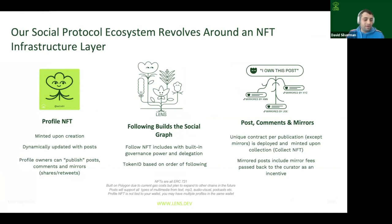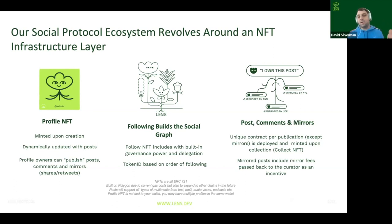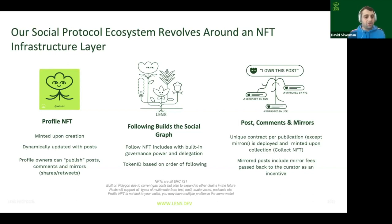The first key primitive is the profile NFT. Similar to Unstoppable Domains or ENS, this NFT represents your profile. It has your handle — for example, I could be @david, Josh would be @josh. It lives in your wallet. You can have multiple profiles the same way you might have a professional and personal Twitter account. It's minted upon creation, can have metadata like a bio, and has a special array you can fill with publications where you post your content.